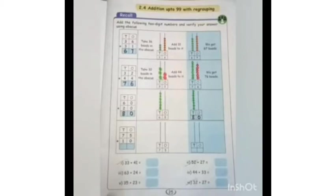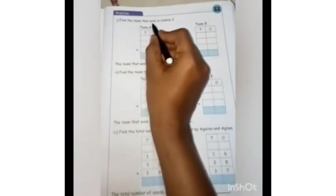You can try this sum at home. Next, find the team that wins in chance 2. Already we saw in chance 1 — Team B was the winner. So now we are going to see in chance 2 which team is the winner. You can refer page number 26.